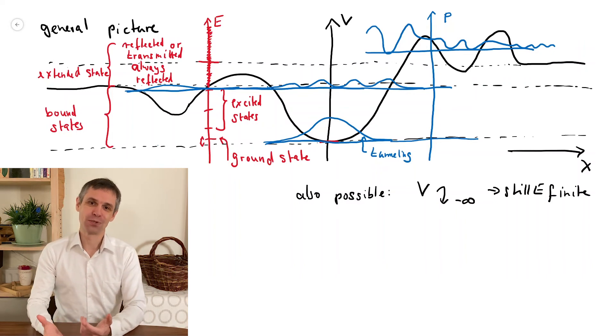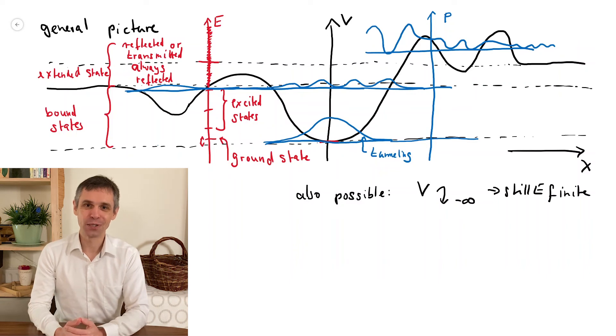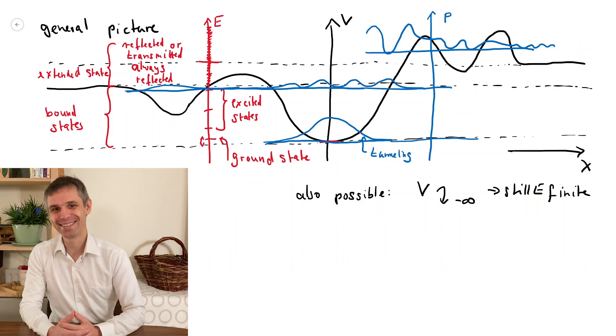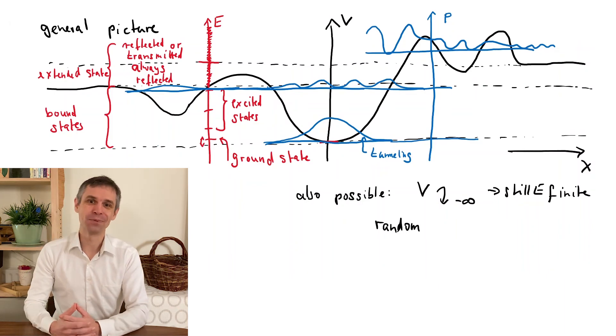And just because I want to be precise and complete, I'd like to mention that there is actually a third type of state beyond the bound states and the extended states, which occurs when we deal with a random potential. And this is a really relevant case for electronic transport.